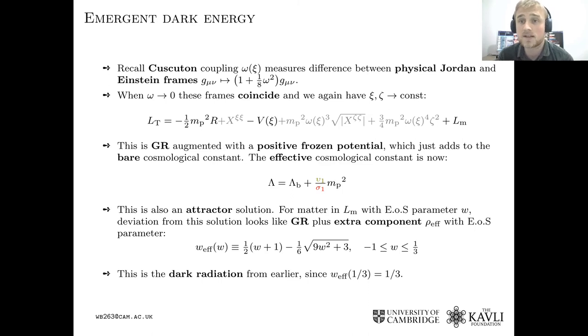So we can check that. We can perturb this solution a little bit and we find that we get this extra component model with an equation of state parameter which depends on the equation of state parameter of whatever is in the matter Lagrangian here. And again, when the universe is dominated by radiation, the extra component looks like radiation. I should add that the difference between the class 3c and class 2a models, this extra pseudoscalar massive particle, all it does is add this potential term. So in class 3c, you will not get any extra dark energy.